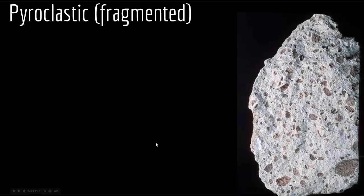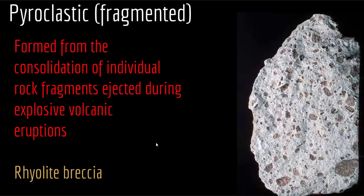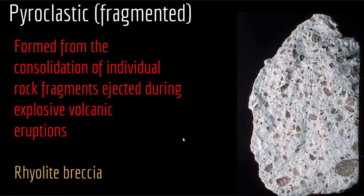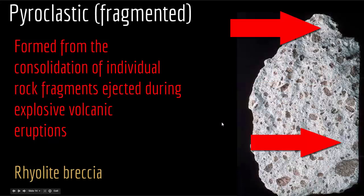The next type is pyroclastic, or fragmented, igneous texture. Pyroclastic igneous textures are formed from the consolidation of individual rock fragments ejected during explosive volcanic eruptions. When fragments ejected during explosive eruptions mix with powdered material, they create pyroclastic or fragmented textures. An example would be rhyolite breccia — as you can see, you have ejected fragments mixed with powdered material that got solidified.